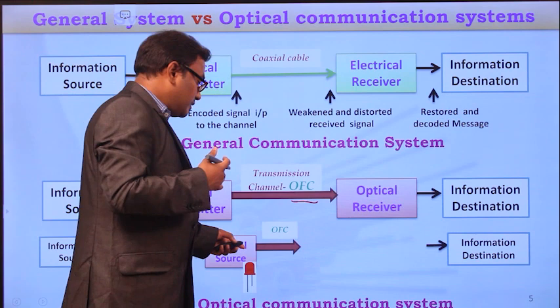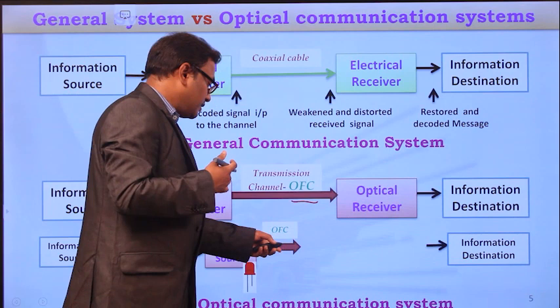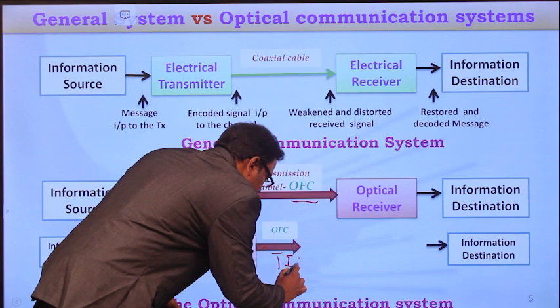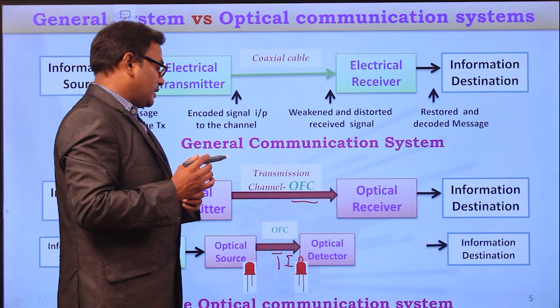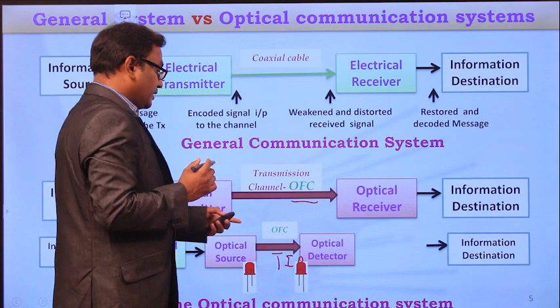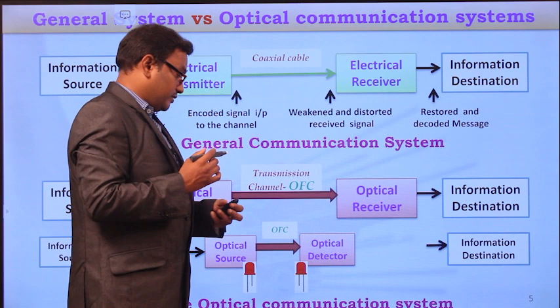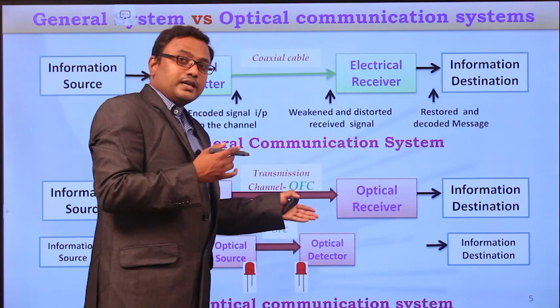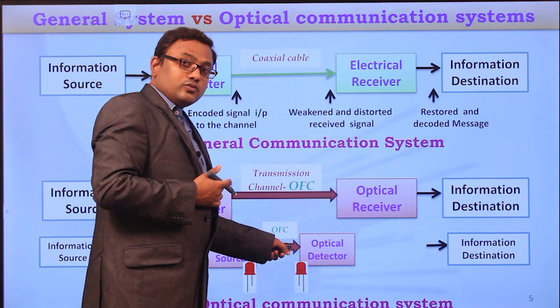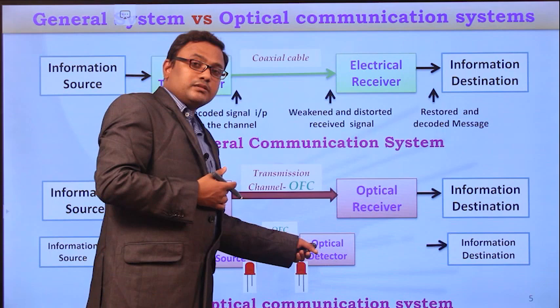The light information is transferred through the optical fiber cable using the principle of total internal reflection. This light information is received by the optical detector. Usually, the optical detector is either a PIN photodiode or an avalanche photodiode. The main responsibility of the optical detector is to detect the light information coming from the optical fiber cable and convert that light information into electrical form.